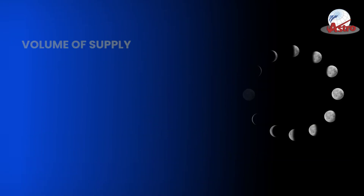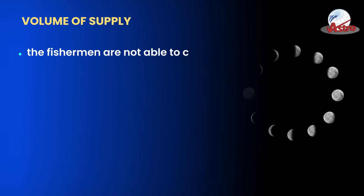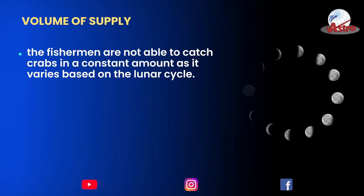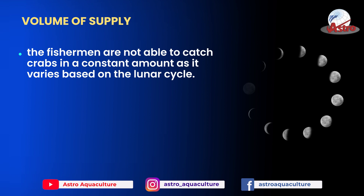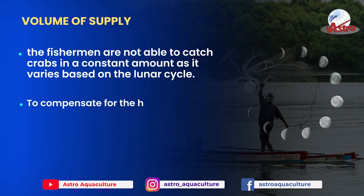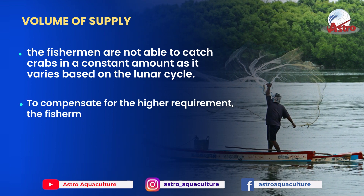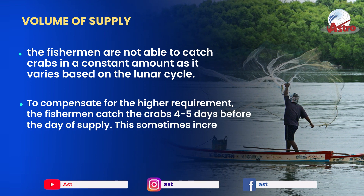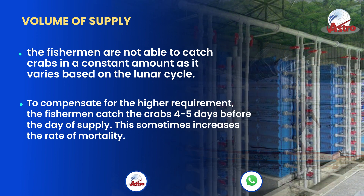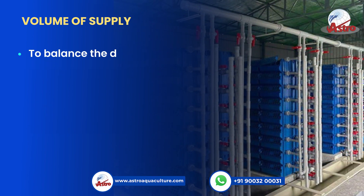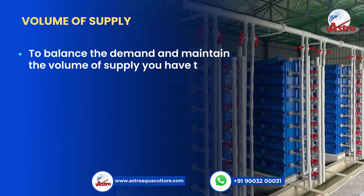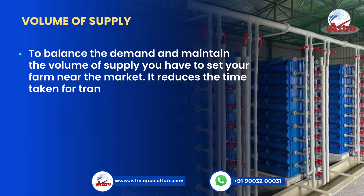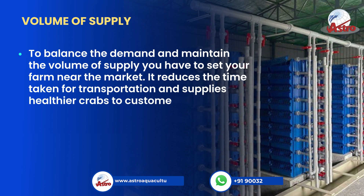Volume of supply: the fishermen are not able to catch crabs in a constant amount as it varies based on the lunar cycle. To compensate for the higher requirement, the fishermen catch the crabs 4 to 5 days before the day of supply. This sometimes increases the rate of mortality. To balance the demand and maintain the volume of supply, you have to set your farm near the market, which reduces the time taken for transportation and supplies healthier crabs to customers on time.